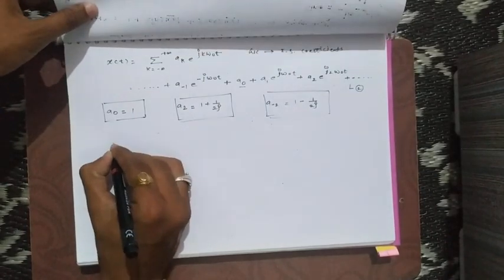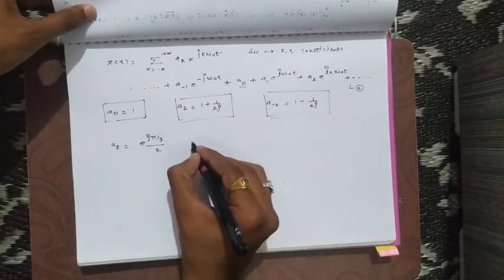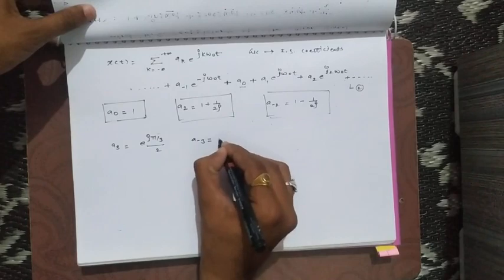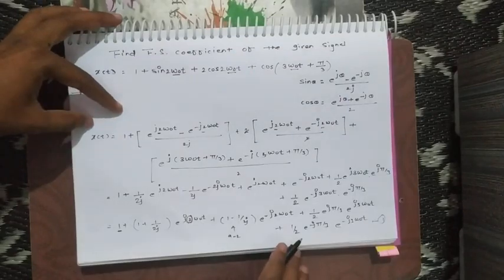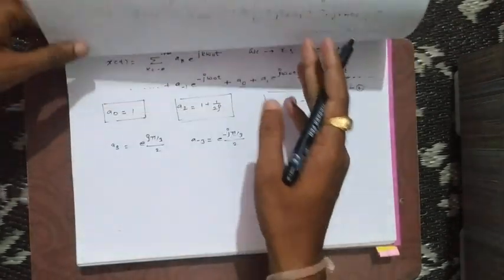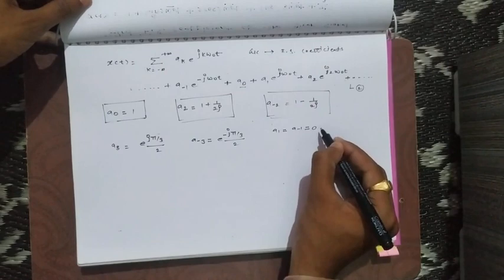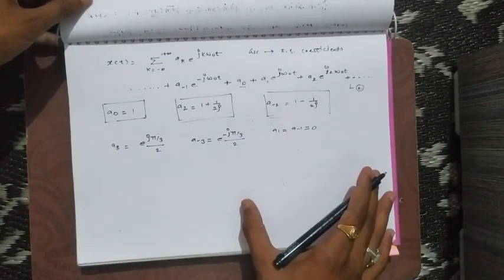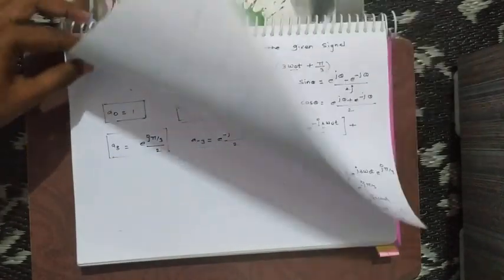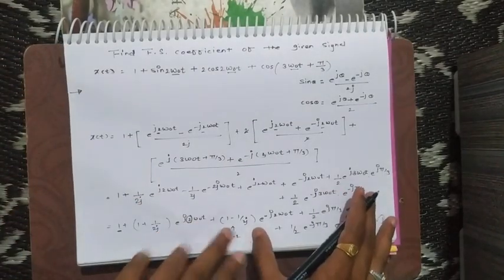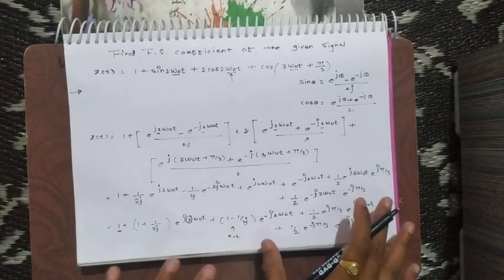So we get a_3 equals e raised to j pi by 3 divided by 2. Similarly, a_{-3} equals e raised to minus j pi by 3 divided by 2. As for remaining terms such as a_1 and a_{-1}, their values are 0, and all other remaining coefficients are also 0. This is the method by which we can find Fourier series coefficients of the given continuous time signal. The first thing that must come to mind is omega naught, the fundamental frequency. This concludes finding the Fourier series coefficient.